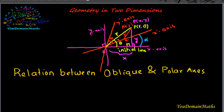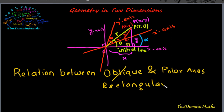Hello viewers, we will find the relation between oblique and polar axes. But firstly we will find the relation between oblique, not rectangular, and polar axes. For this reason, we draw a picture showing the rectangular polar coordinate system and oblique axes all together.